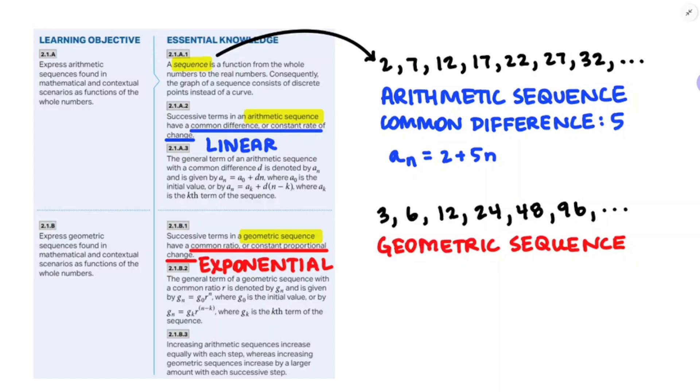And because it doubled each time, the common ratio is going to be 2. And then they gave us another helpful formula. G_n equals G_0 times r to the n, where G_0 is the zeroth term, and r is that common ratio. But we also have G_n equals G_k times r to the n minus k, where G_k is the kth term of the sequence.